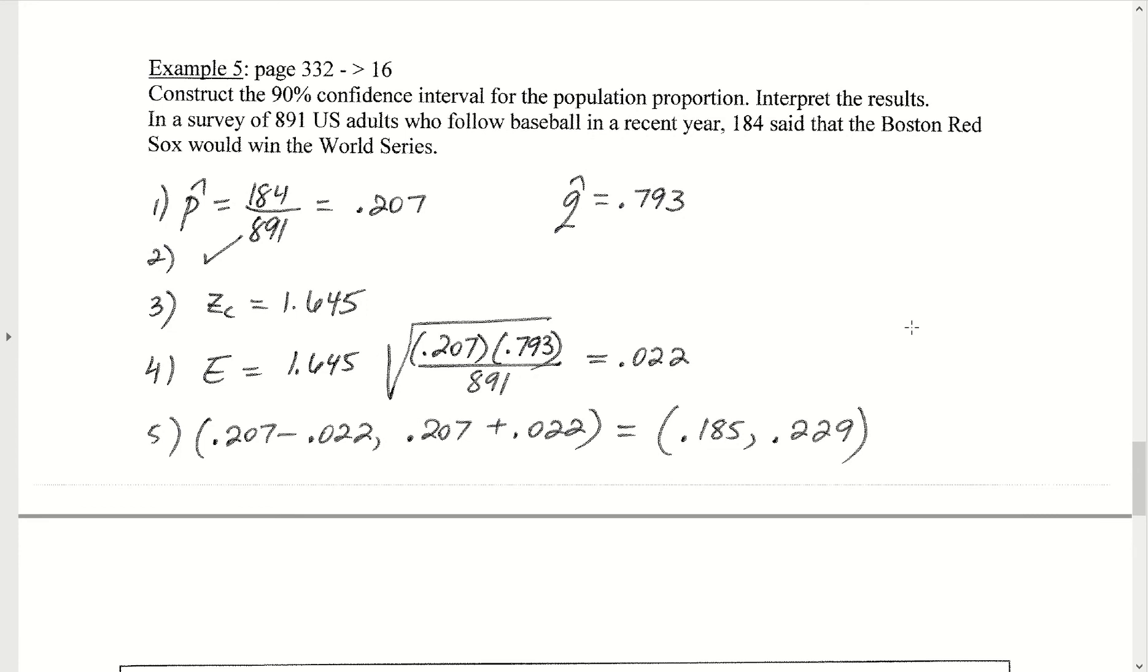Let's take a look at the next one, and I'm just going to use the calculator for this. Let's construct a 90% confidence interval for the true proportion of U.S. adults that believe the Red Sox will win the World Series.